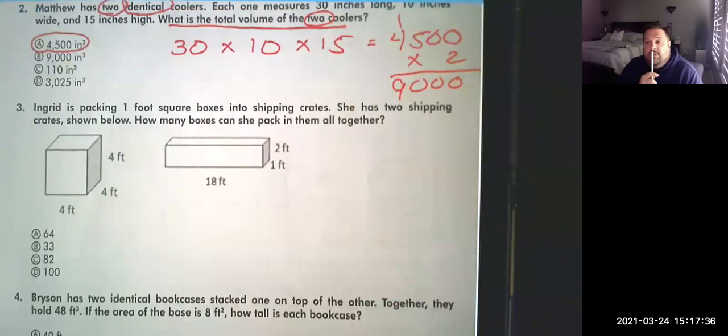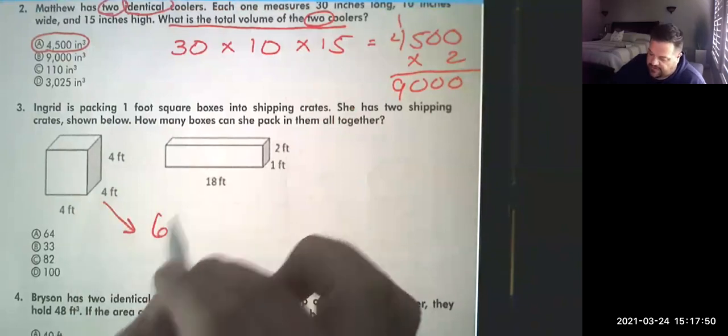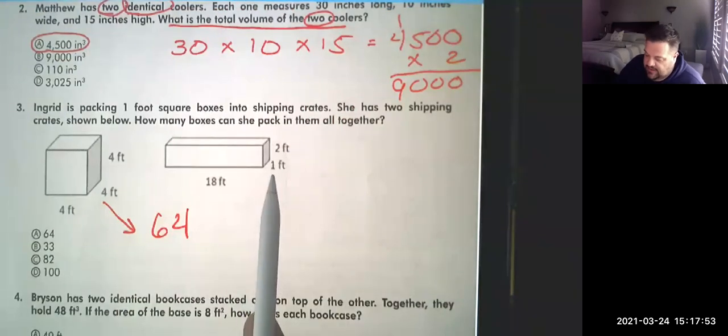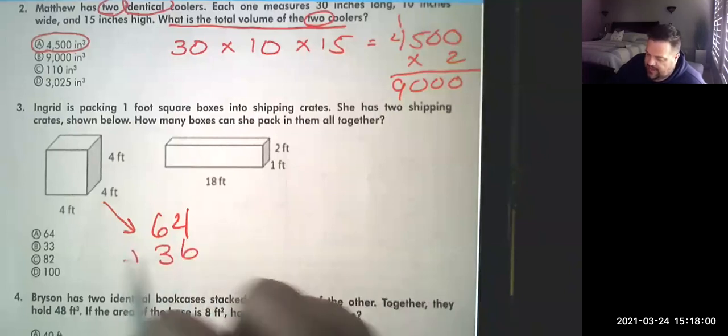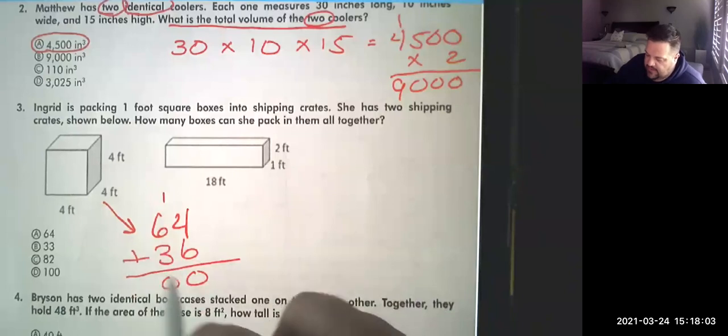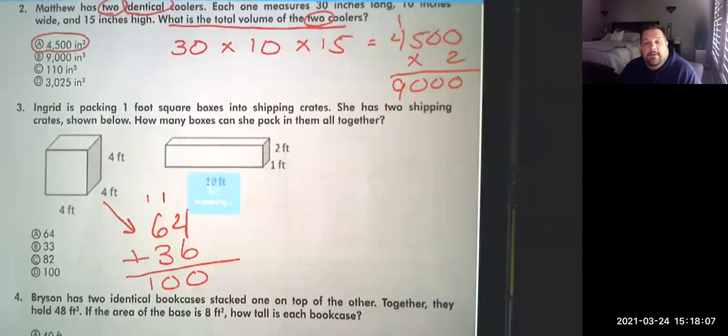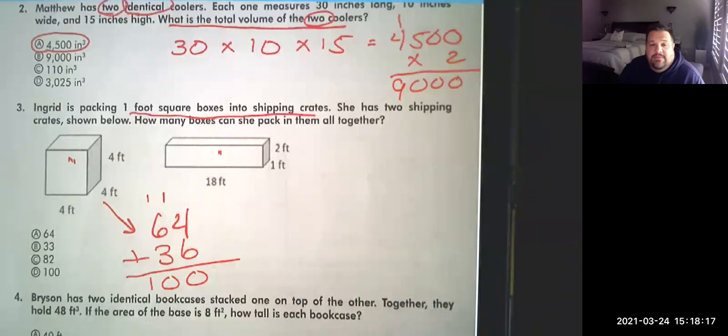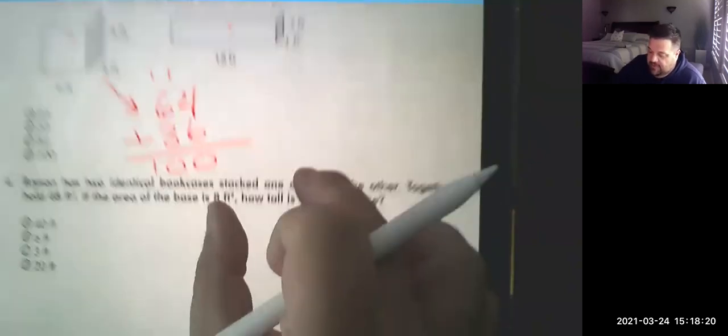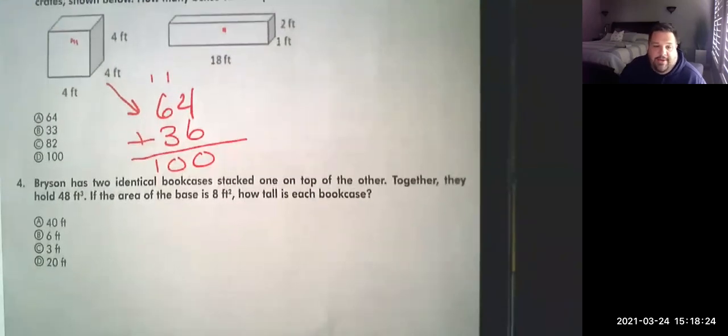Okay, so number three is pretty simple. She's just going to put cubes in each one of these boxes and we want to know how many of her little box cubes she can put in there. She should figure out the area of the two of them and then add it together. So 4 times 4 times 4, the area of this one would be 64. And 18 times 1 is 18 times 2 is 36. So you would add those together, 100. So they're not really trying to trick you here though. She's just taking the one foot square boxes and putting them into these crates that are here. Okay, give number four a try on your own.